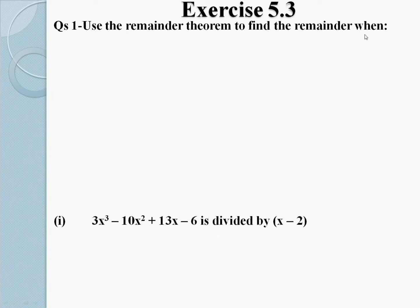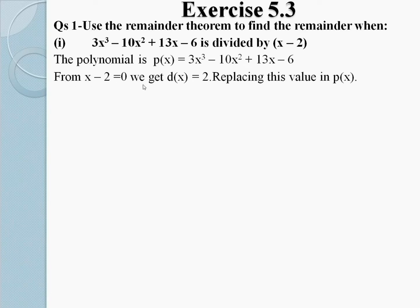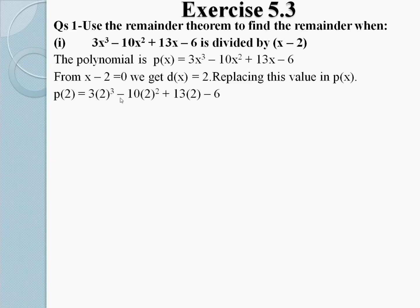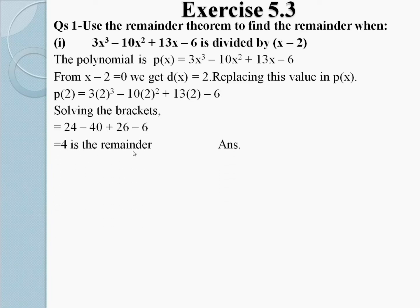Use the remainder theorem to find the remainder when: part 1, 3x³ - 10x² + 13x - 6 is divided by x - 2. The polynomial is P(x) = 3x³ - 10x² + 13x - 6. From x - 2 = 0, we get x = 2. Replacing: P(2) = 3(2)³ - 10(2)² + 13(2) - 6. Solving: 24 - 40 + 26 - 6 = 4 is the remainder, required answer.